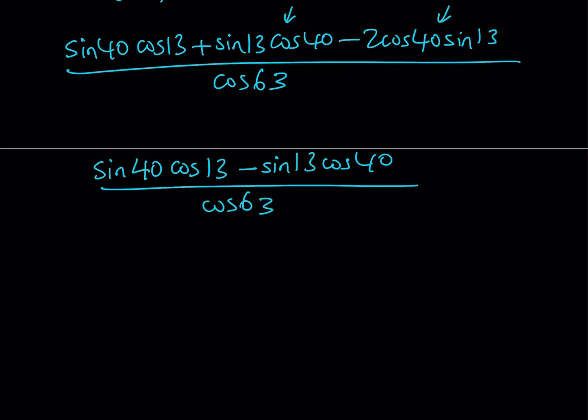Great. Now once we simplify we do get a nice expression in the numerator. Because it is in the form sine alpha cosine beta minus sine beta cosine alpha, and this is nothing but sine alpha minus beta.